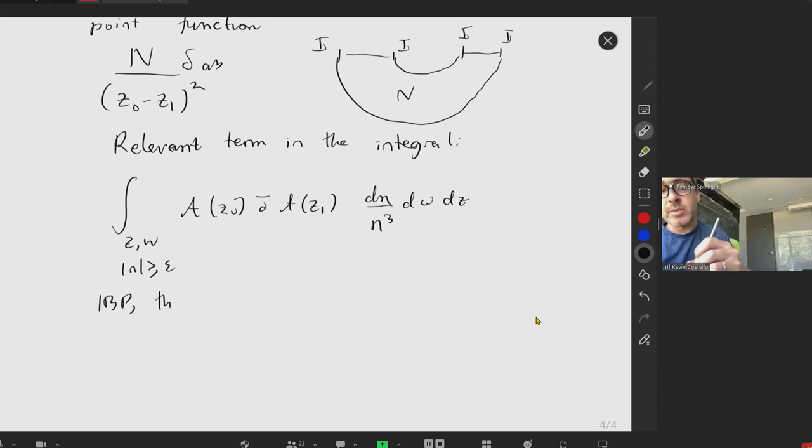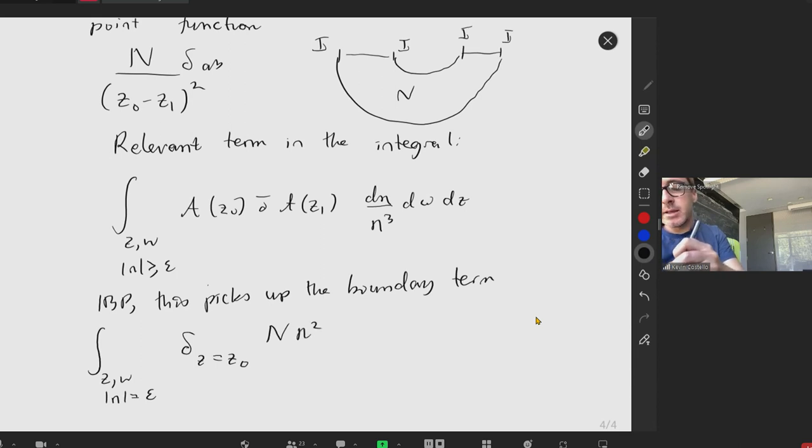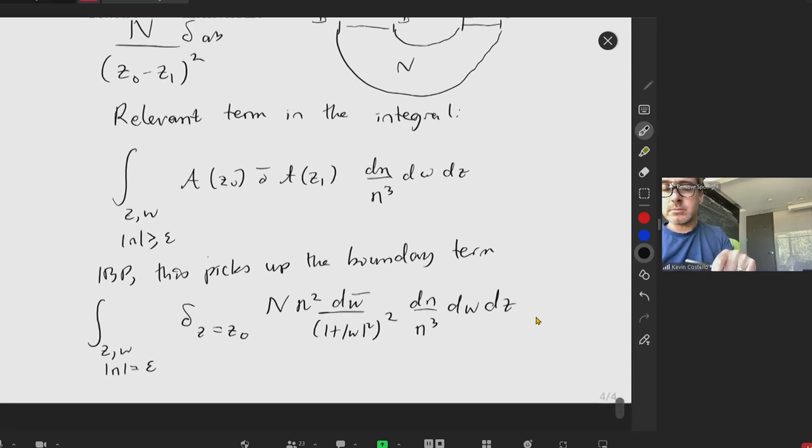And because our geometry is non-compact, we're going to integrate over z and w, where n is, we're going to introduce a cutoff near the boundary of AdS3. Now, if we do integration by parts, this is a pure boundary integral.